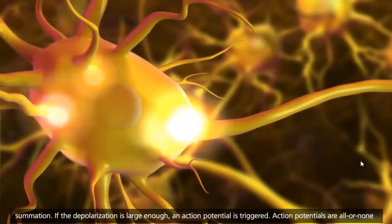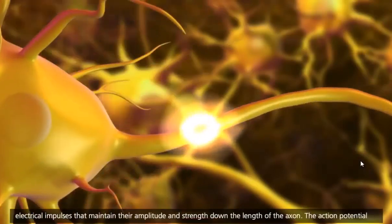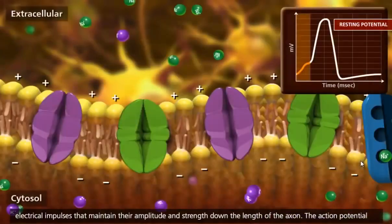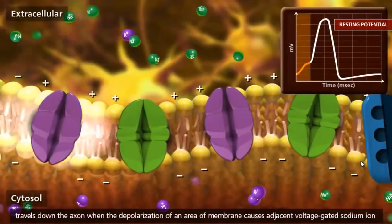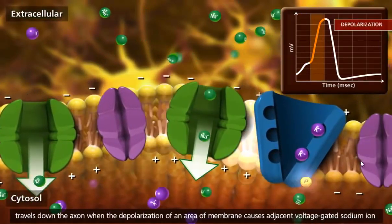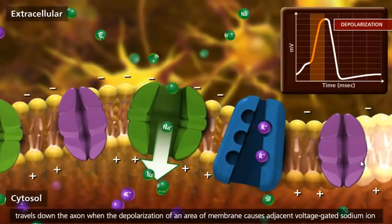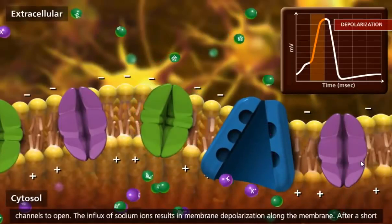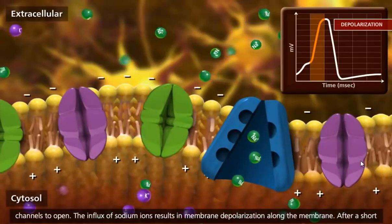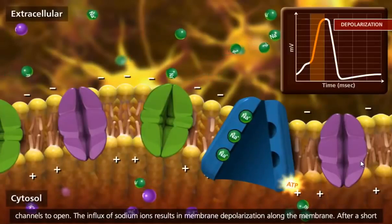Action potentials are all-or-none electrical impulses that maintain their amplitude and strength down the length of the axon. The action potential travels down the axon when the depolarization of an area of membrane causes adjacent voltage-gated sodium ion channels to open. The influx of sodium ions results in membrane depolarization along the membrane.